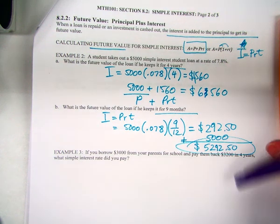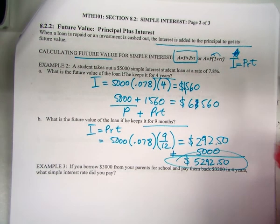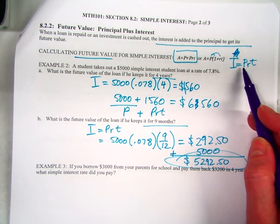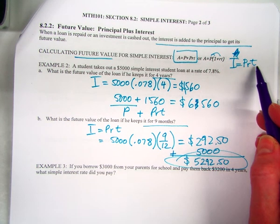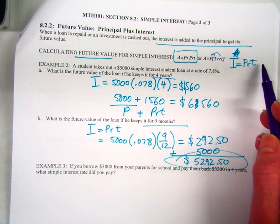So far we've been talking about simple interest, right? And that's the formula, I equals PRT. What does P stand for? Time. What's important about the time? What does it have to be given as? Years, right?